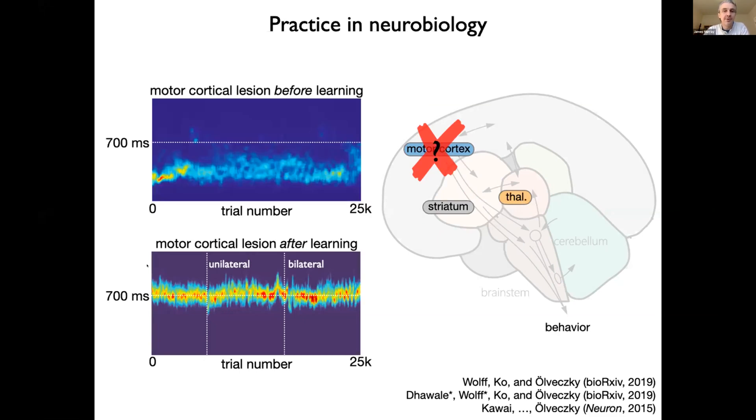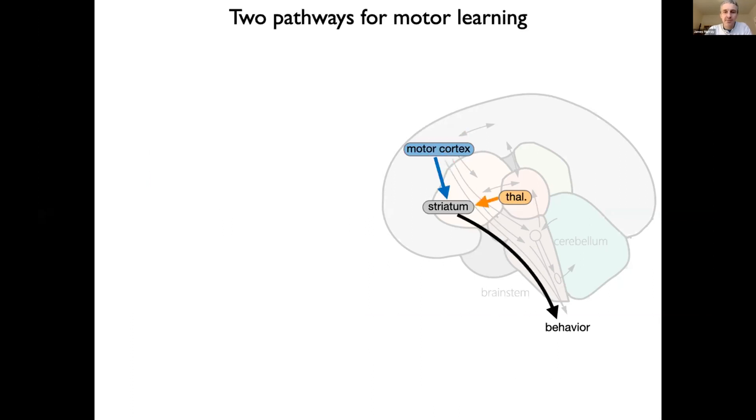If however, you take a naive animal and you lesion motor cortex, then the animal is never able to learn the behavior no matter how much it tries practicing. So together, this suggests that the motor cortex is important for learning the behavior, but not necessarily for executing it after it's been learned. So this is our minimal model of the motor circuit inspired by these experiments, where the experiments show that the thalamic pathway is always necessary, that the motor pathway is necessary only for learning, but not for execution.